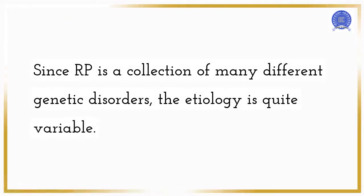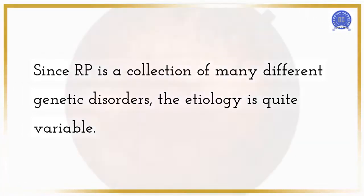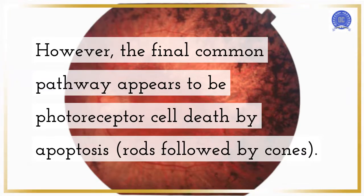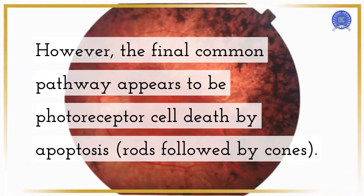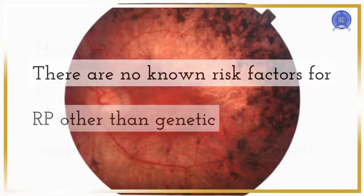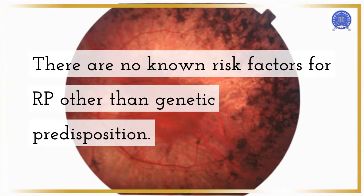Since RP is a collection of many different genetic disorders, the etiology is quite variable. However, the final common pathway appears to be photoreceptor cell death by apoptosis, rods followed by cones. There are no known risk factors for RP other than genetic predisposition.